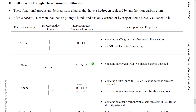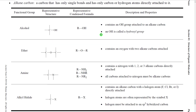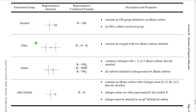The next set of functional groups have alkane-like chains with one substituent containing a different atom from carbon — typically non-metals from the upper right of the periodic table like oxygen, nitrogen, sulfur, or chlorine. These are called heteroatoms. In this section, an 'alkane carbon' means a carbon with only single bonds and only carbon and hydrogen atoms directly attached — no heteroatoms, no double bonds. Now let's look at the four typical heteroatom-substituted functional groups.